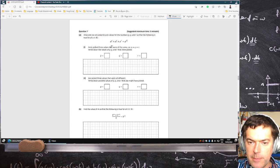Amy picked three values that were all the same so that P equals Q equals R. Write down the values of P, Q and R that Amy picked.